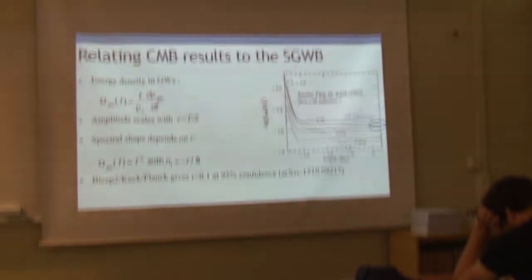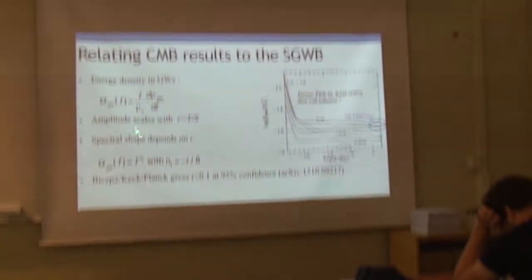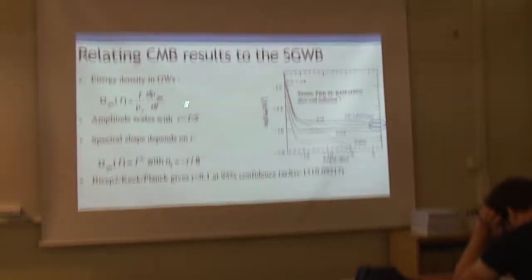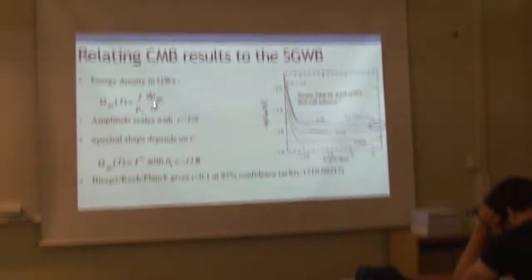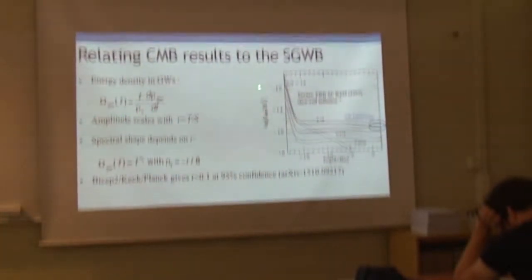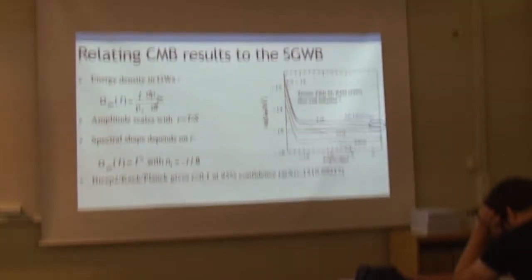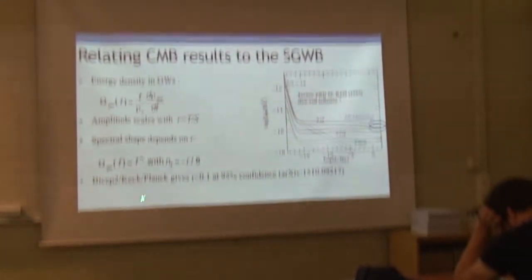We have very little information about this stochastic gravitational background — we have not detected it yet. But we have some ideas about the energy density. The background is usually characterized by a quantity called the energy density parameter, given by the derivative of the gravitational wave energy density divided by rho_c, which is the energy needed to close the universe today. The amplitude is related to the tensor-to-scalar ratio, and we have an upper limit given by BICEP2, which is smaller than 0.1.